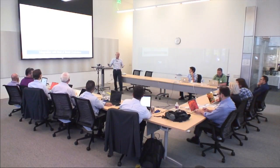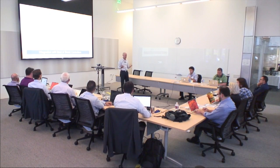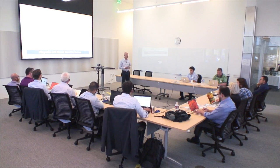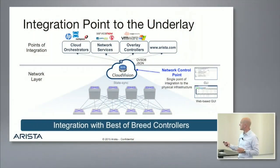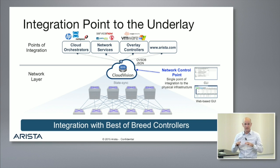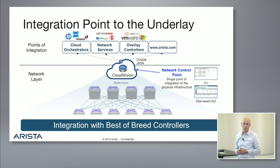This idea of a network control point — a controller — is a very common term. CloudVision is a specific type of controller: a single point of integration to the infrastructure. It's not just a set of APIs — there's a CLI aspect so people familiar with the CLI can access the state, and there's also a web-based GUI, which we'll be showing you in a demo.